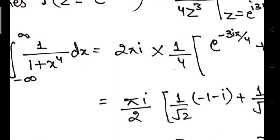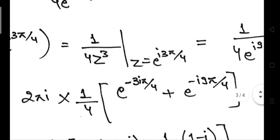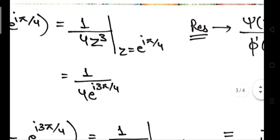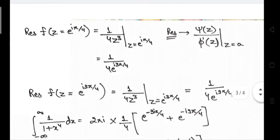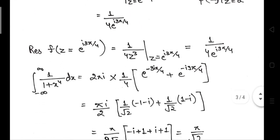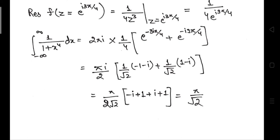The final expression is 2 pi iota times the sum of residues. The factor 1/4 is present in both residues and is written directly. The e to the power iota theta form is further simplified using trigonometric functions and properties, giving a final answer of pi by root 2. Even with the short trick you can solve it, but you should also know the detailed method for cases where the trick is not applicable.